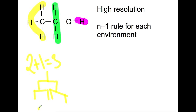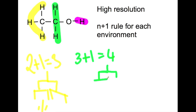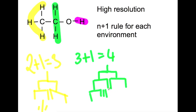The peaks will be in the form of height 1, height 2, height 1. For the next environment — the CH2 — we've got 3 hydrogens on the adjacent carbon, so 3+1 gives 4 peaks. Starting from one peak, it couples once, twice, and then a third time, giving a pattern of height 1, 3, 3, 1. For the final OH hydrogen, it's too far away from any adjacent hydrogens, so we would just end up with one peak for that one.